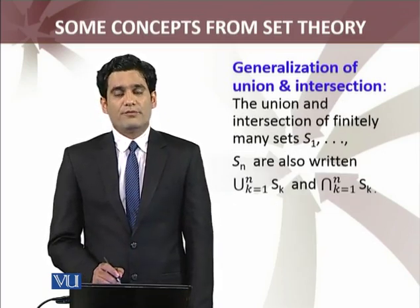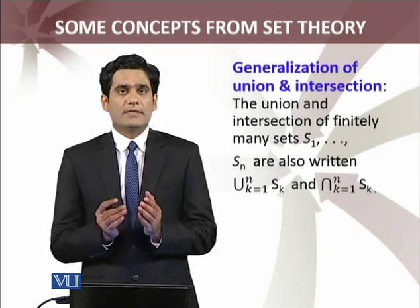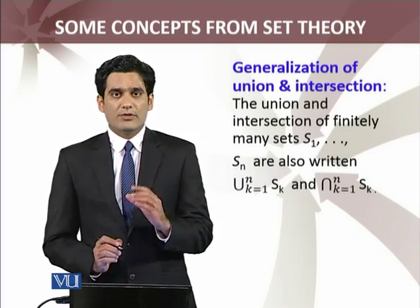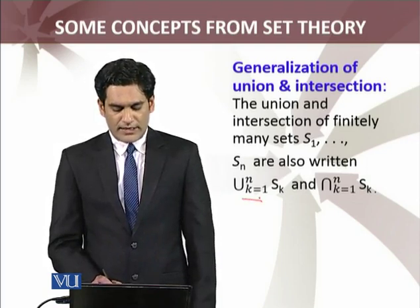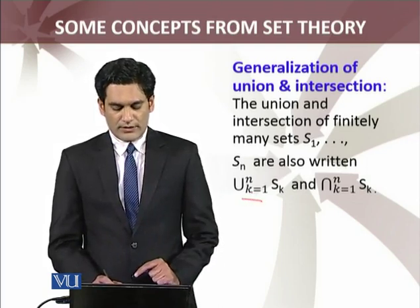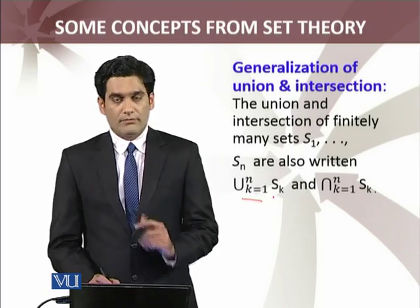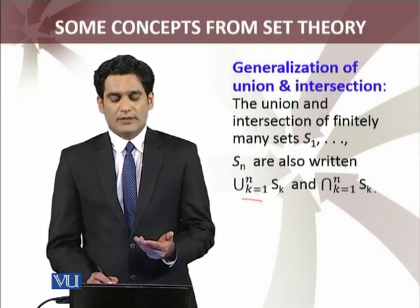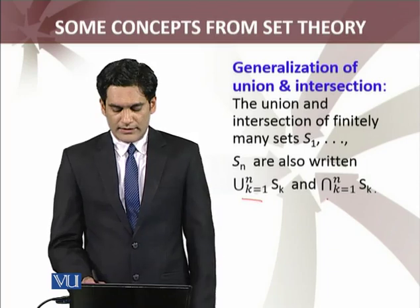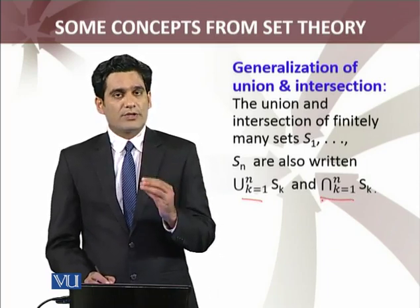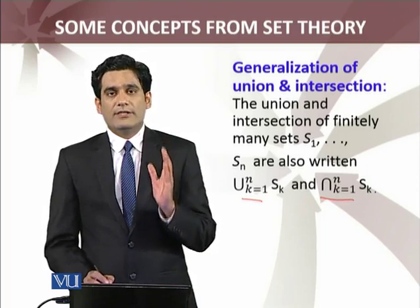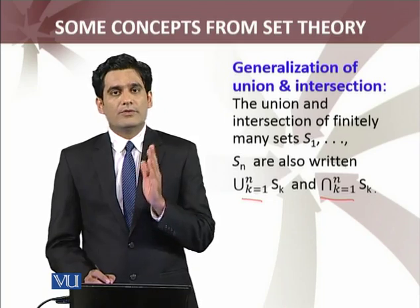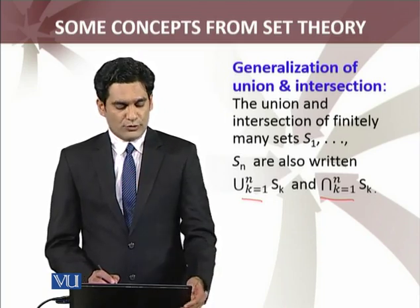The union and intersection of finitely many sets — नाम से जाहिर है के finitely many sets हैं, तो collection finite है. Union is defined as union k=1 to n, where n is a finite number — n could be 10, 20, 10,000, or 10 raised to power 10,000, but a finite number. Intersection is defined as those members of the collection which belong to all the sets — S1 में भी है, S2 में भी है, S3 में भी है, so on and so forth.